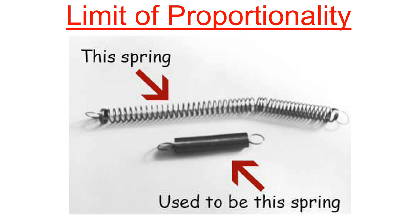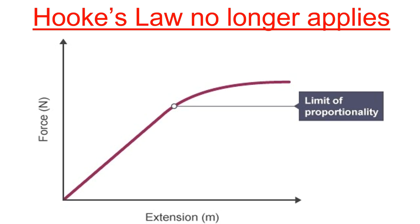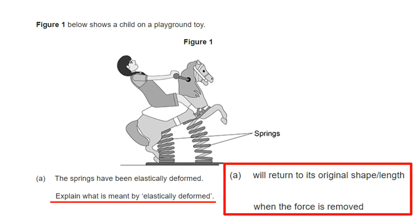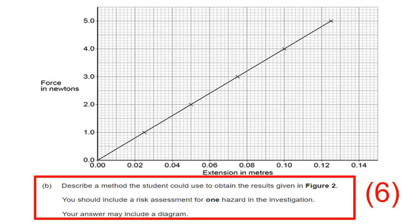The limit of proportionality is when a spring is stretched so far it no longer returns to its original shape — it's broken. Beyond this point the graph curves and you cannot use it to find the spring constant. When a spring is elastically deformed it returns to its original shape when the force is removed; inelastic deformation means it's been permanently broken.